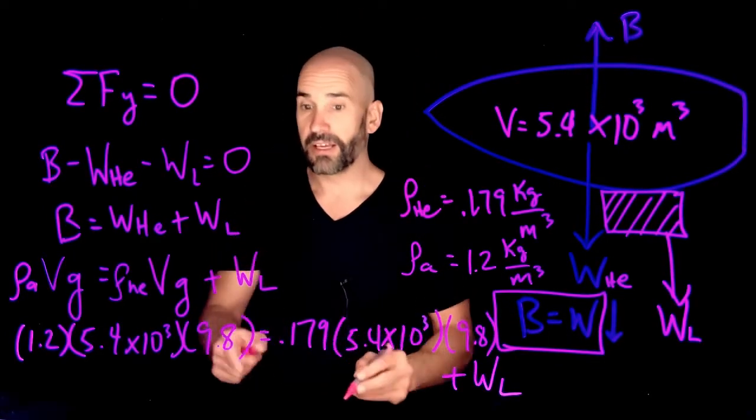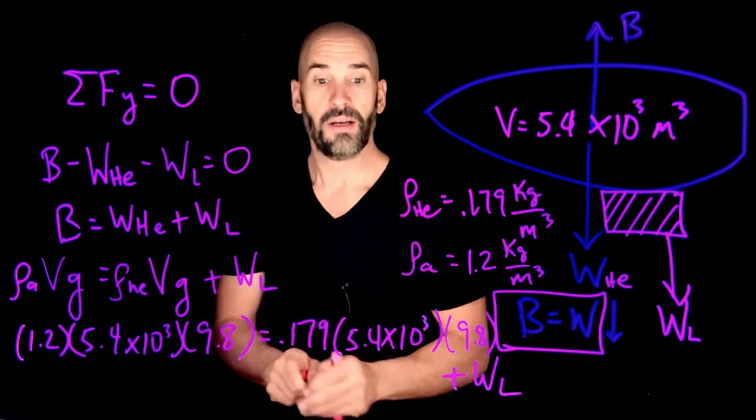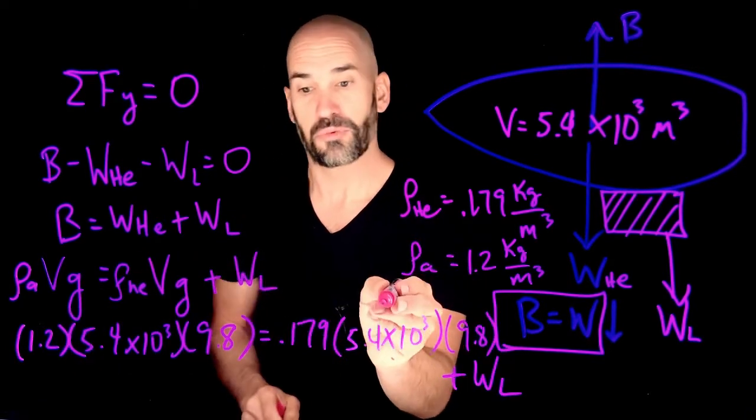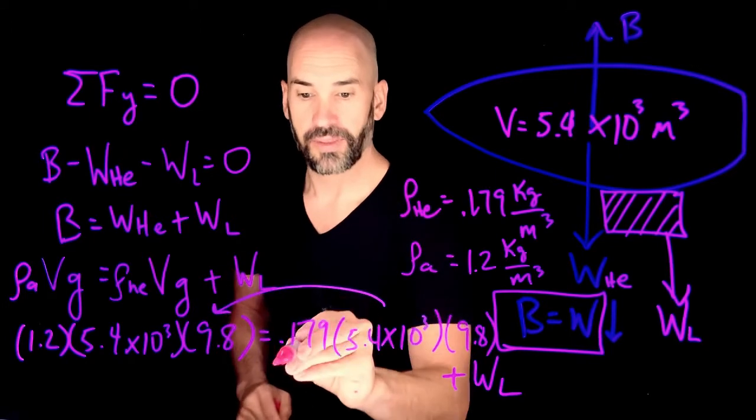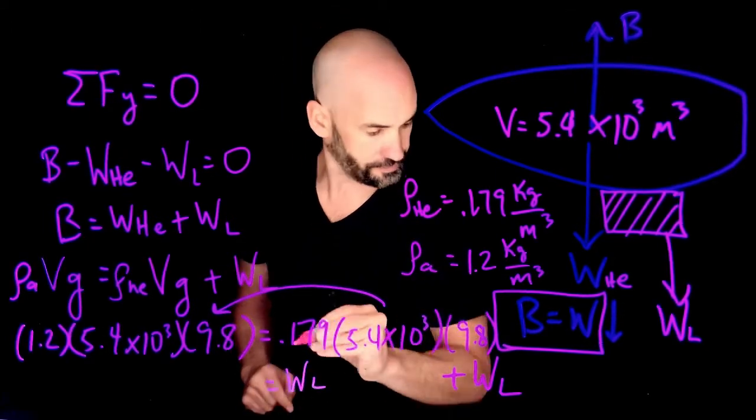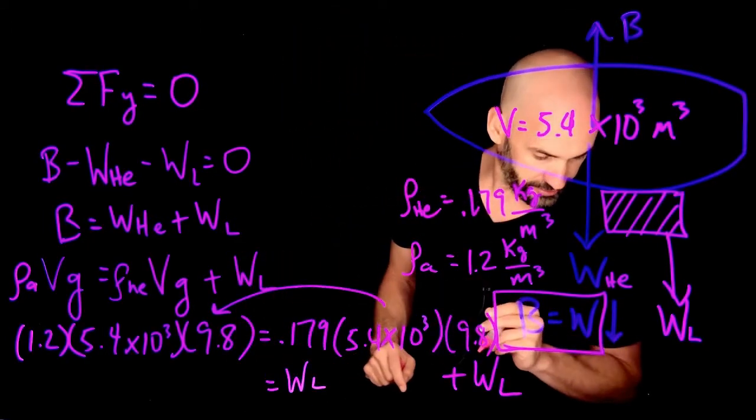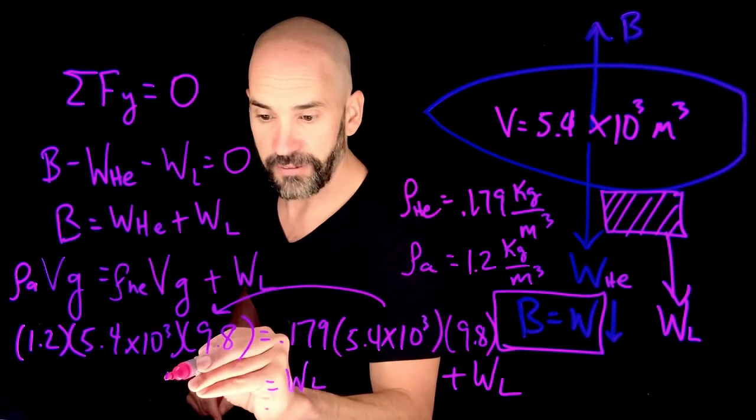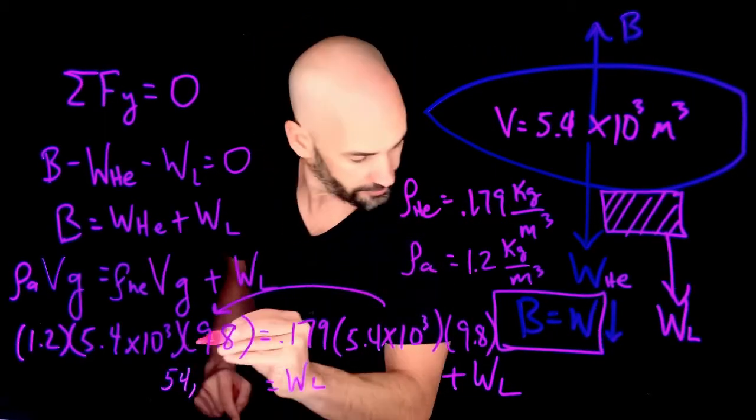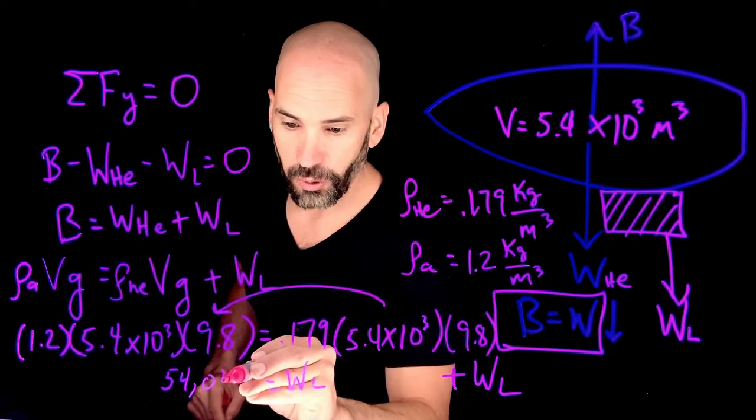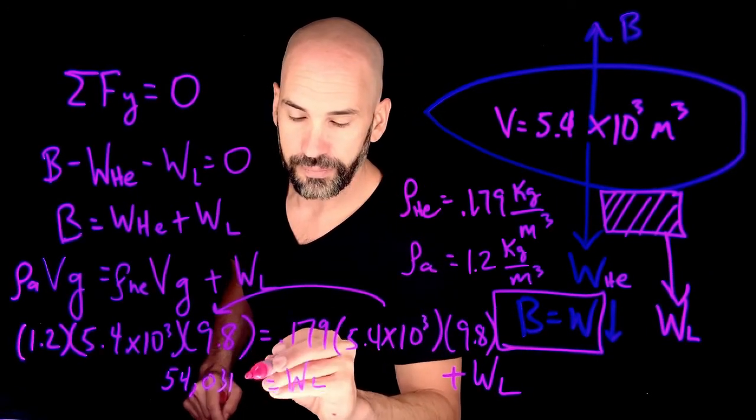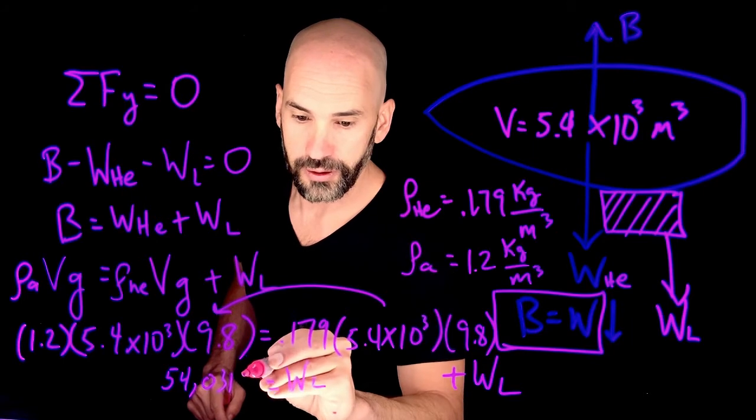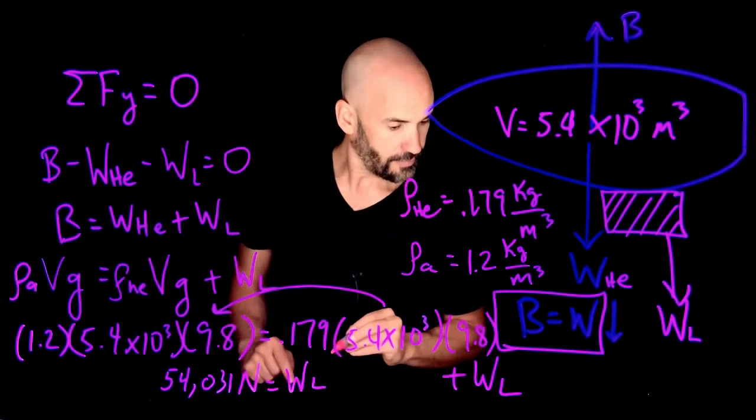So presumably, if I just multiply these, multiply these, subtract this over to the other side, I have the weight of the load. And according to my calculations, I get that the weight of the load should be about 54,031 newtons.